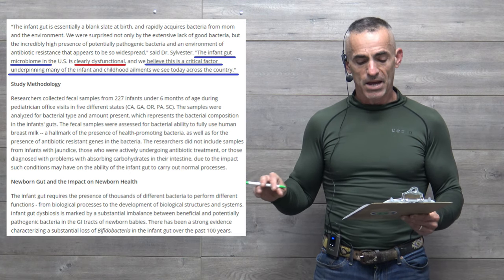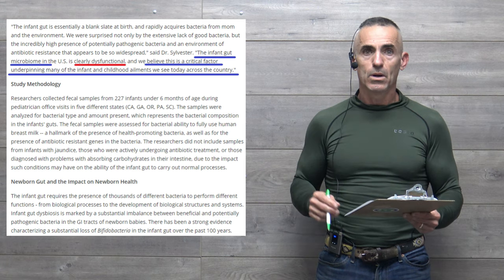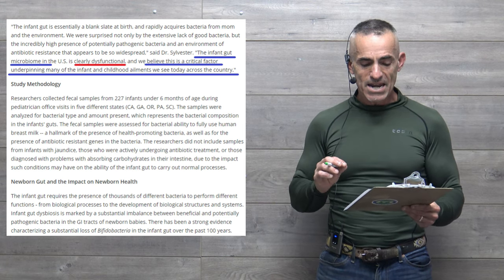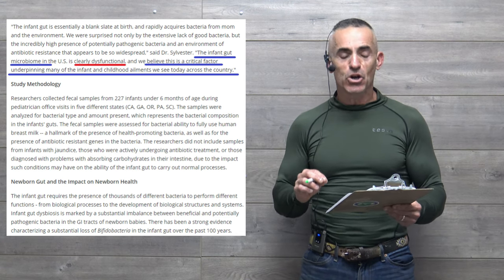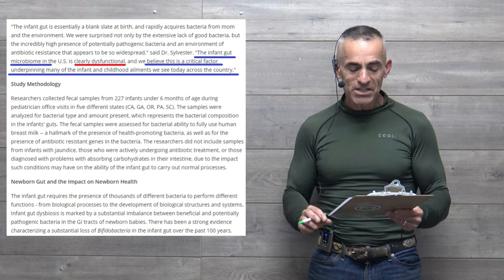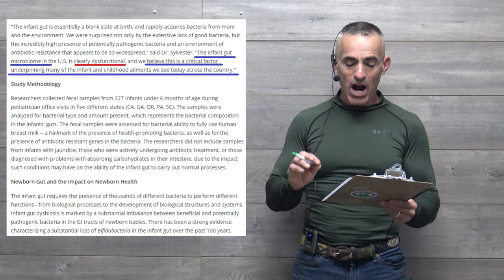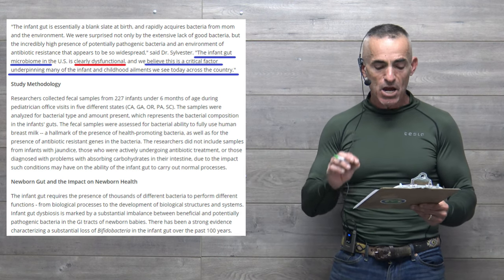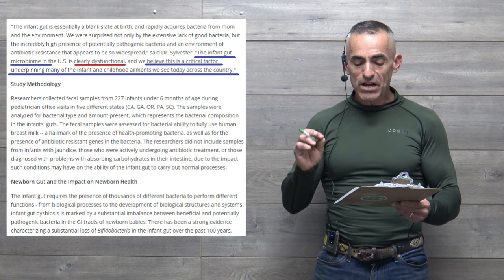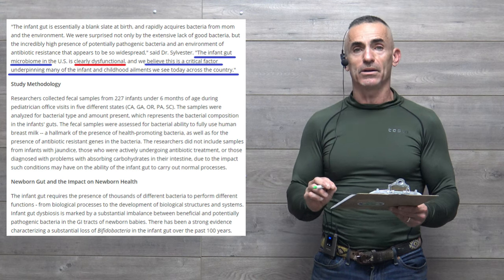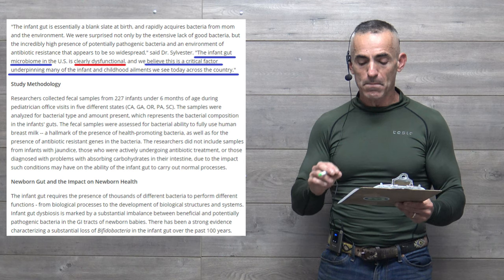Quote: 'The infant gut is essentially a blank slate at birth and rapidly acquires bacteria from mom and the environment. We were surprised not only by the extensive lack of good bacteria but the incredibly high presence of potentially pathogenic bacteria, and in an environment of antibiotic resistance that appears to be so widespread.' The infant gut microbiome in the U.S. is clearly dysfunctional, and we believe this is a critical factor underpinning many of the infant and childhood ailments we see today.